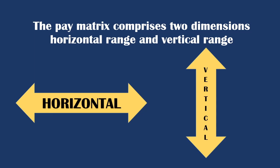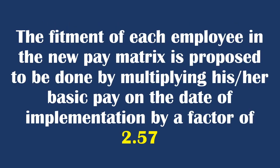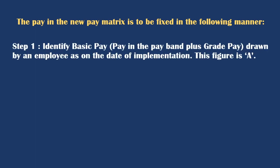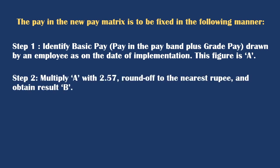The fitment of each employee in the new pay matrix is proposed to be done by multiplying their basic pay on the date of implementation by a factor of 2.57. Pay fixation is done as follows: Step 1 — identify the basic pay (pay in the pay band plus grade pay) drawn by the employee as on the date of implementation; call this figure A. Step 2 — multiply A by 2.57, round off to the nearest rupee, and obtain result B.